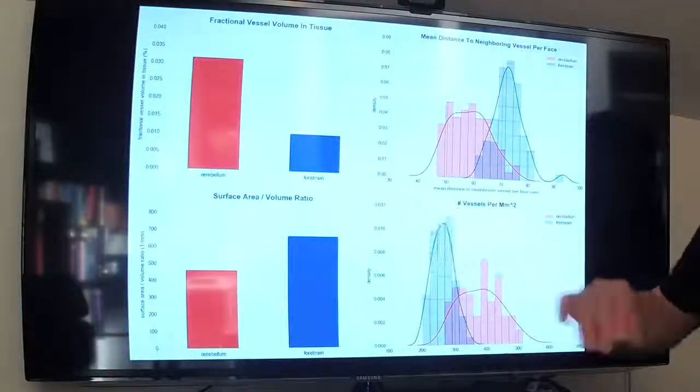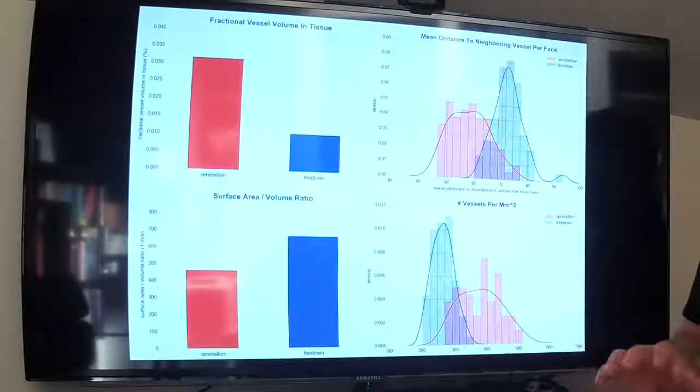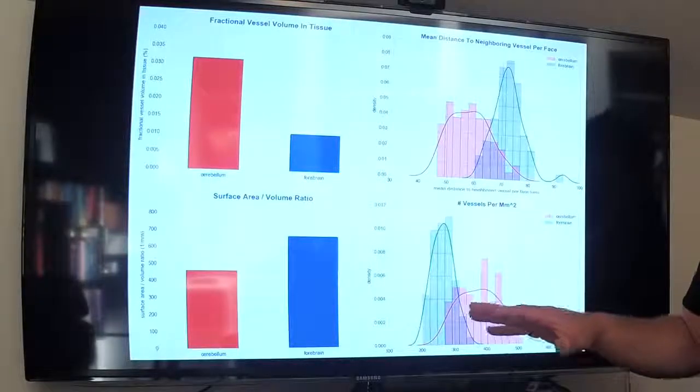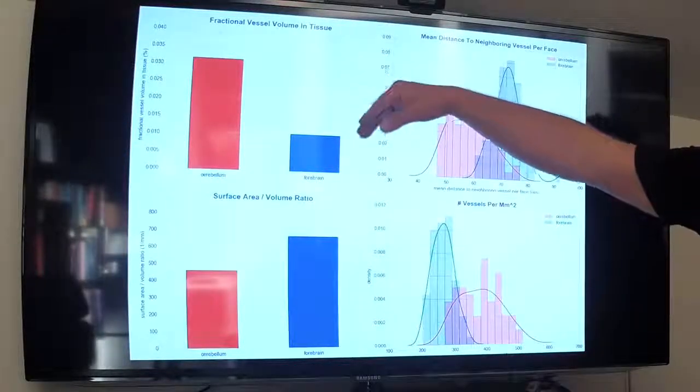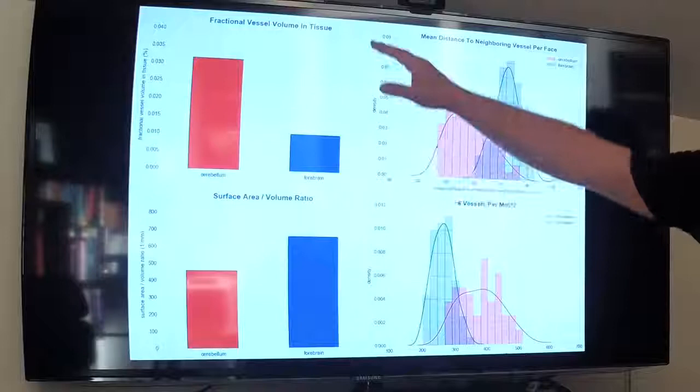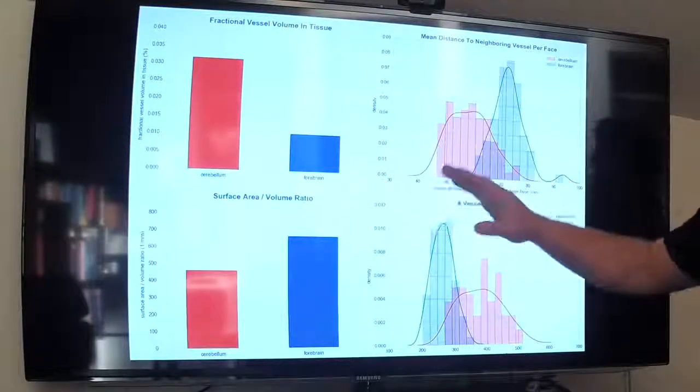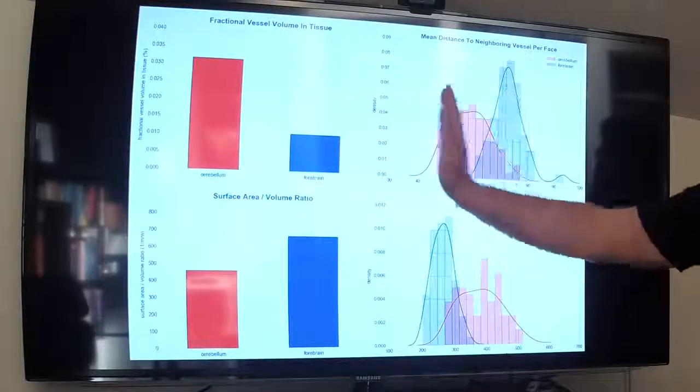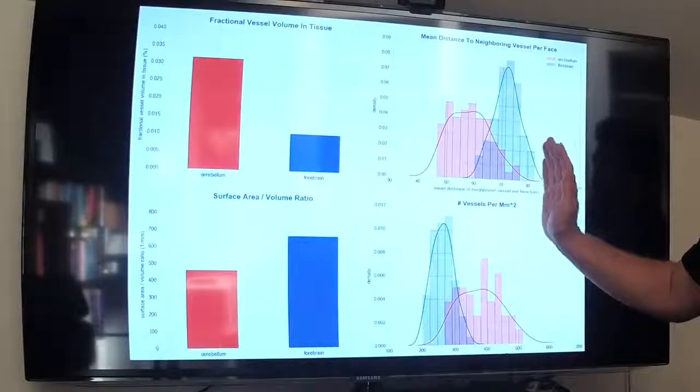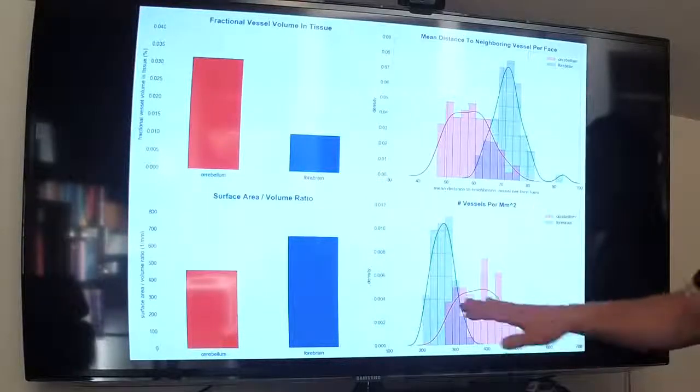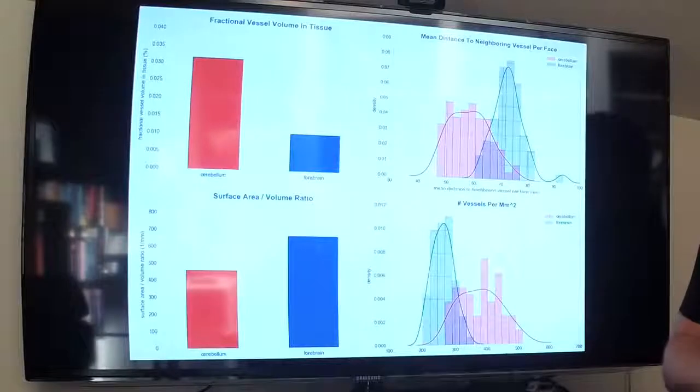So here's an example of that from a paper that we're working on, where we have two different regions of interest, one in the cerebellum and one in the forebrain. And so we have different dimensions that we can describe the tissue on, like here is the fractional vessel volume of the tissue. This is the mean distance to the nearest blood vessel interface. And so we have all these statistical descriptions of the tissue.